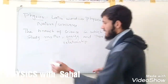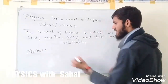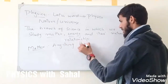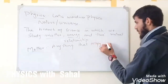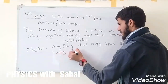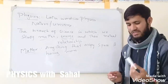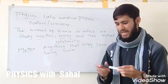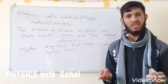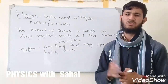Matter and energy — what is matter? Matter is anything that occupies space and has mass. For example, this marker has some mass and occupies some space, so this is matter. A ball in your hand occupies some space and has some mass. All the things around us in nature — this is all matter.